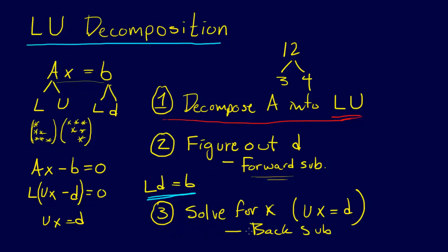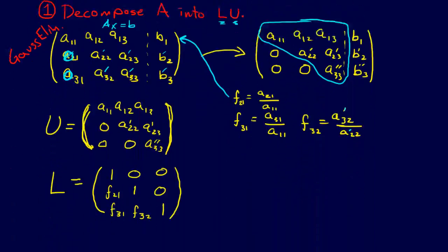So now we're on step 3. We can solve for x. We've decomposed A into L and U. We've solved this equation, LD equals B. Now we can just go ahead and solve for x with this equation, UX equals D by back substitution, and that's what we're going to show you right now.